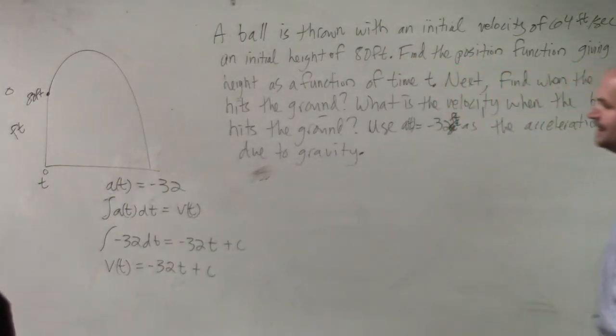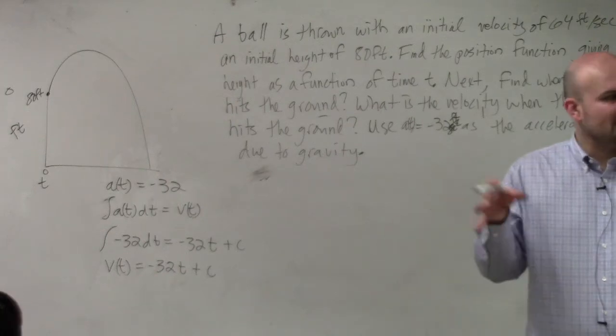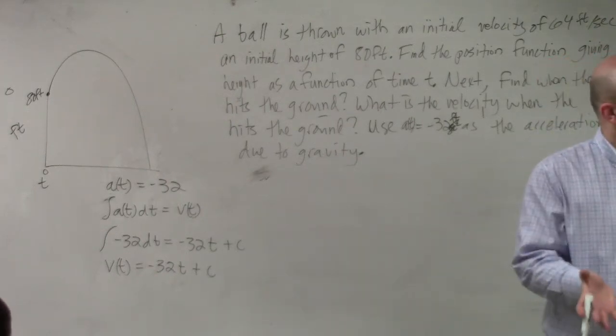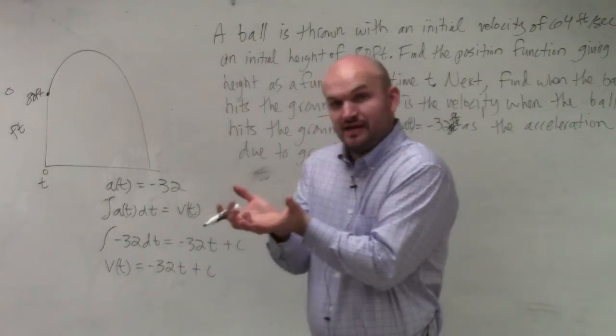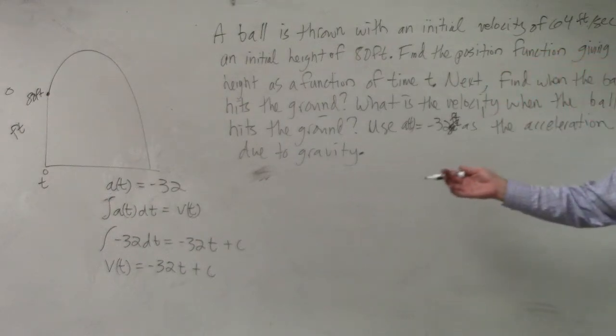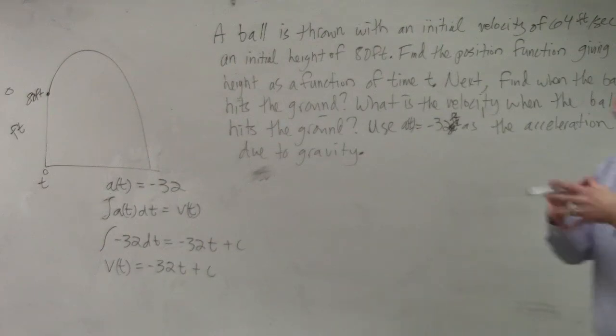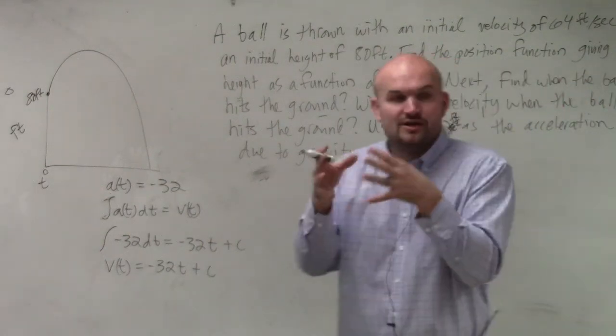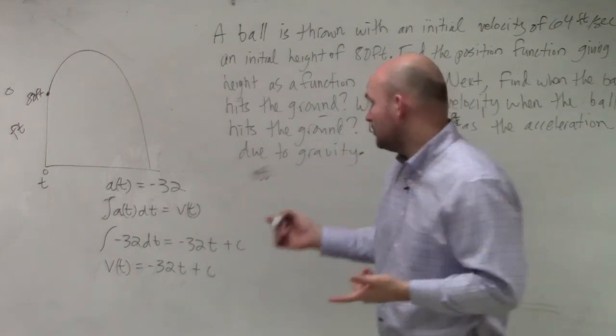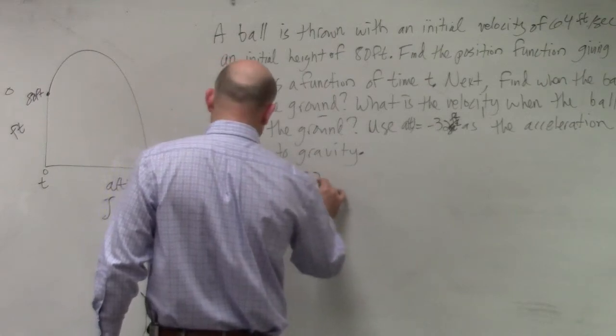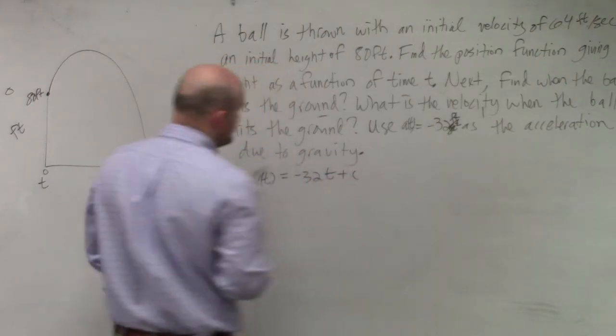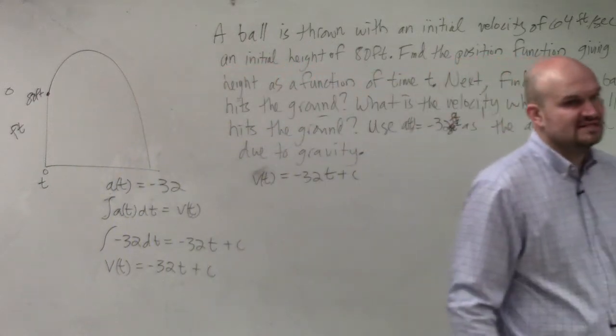Now, when we look at this though, remember what we practiced last class period was always finding the general solution, right? And today, we're working on finding the particular solution. So to find the position function, we can't have c there. So we need to be able to figure out, based on my velocity function, is there enough information I know that I can solve for c? So remember, v sub t equals negative 32 t plus c. Do I know a given velocity at a certain given time?